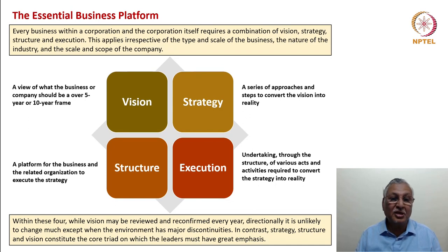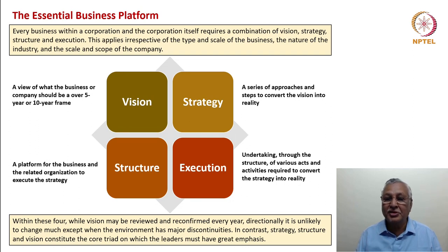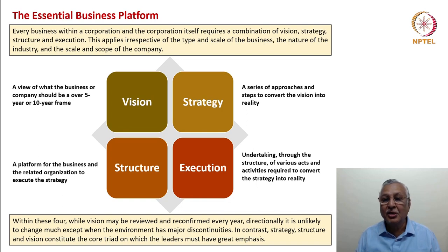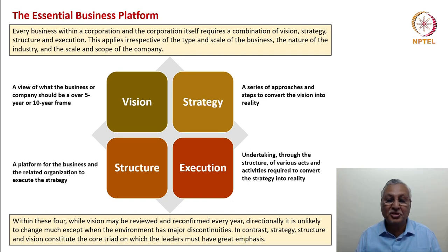Vision is a view of what the business or company should be over a five-year time frame. Strategy is a series of approaches and steps to convert the vision into reality. Structure — which is the organization structure for the most part — is a platform for the business and related organization to execute the strategy. Execution is the undertaking through the structure of various acts and activities required to convert the strategy into reality. The other enablers like systems, staff, and skills will be considered at a later stage.